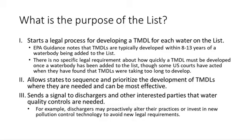The second purpose of the list is that it allows states to sequence and prioritize the development of TMDLs where they're needed and can be most effective. By having a list, the list is essentially an organizing tool for states to prioritize which TMDLs they want to work on first. A third purpose of the list is that it sends a signal to dischargers and other interested parties that water quality controls are needed for a particular water body. Even if it might take some time for a TMDL to be developed, the mere fact that a water body has been identified as impaired and placed on the list might prompt changes in activities by dischargers, such as proactively altering their practices or investing in new pollution control technology before new binding legal requirements might be imposed.